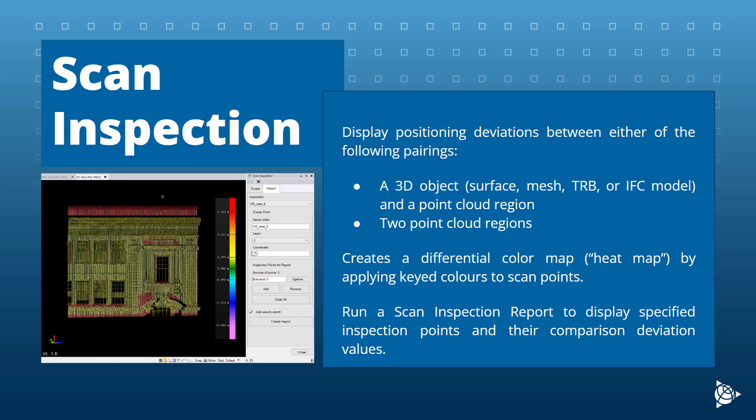You can view the color map in Graphic View and you can run a scan inspection report showing specified inspection points and the comparison deviation values.